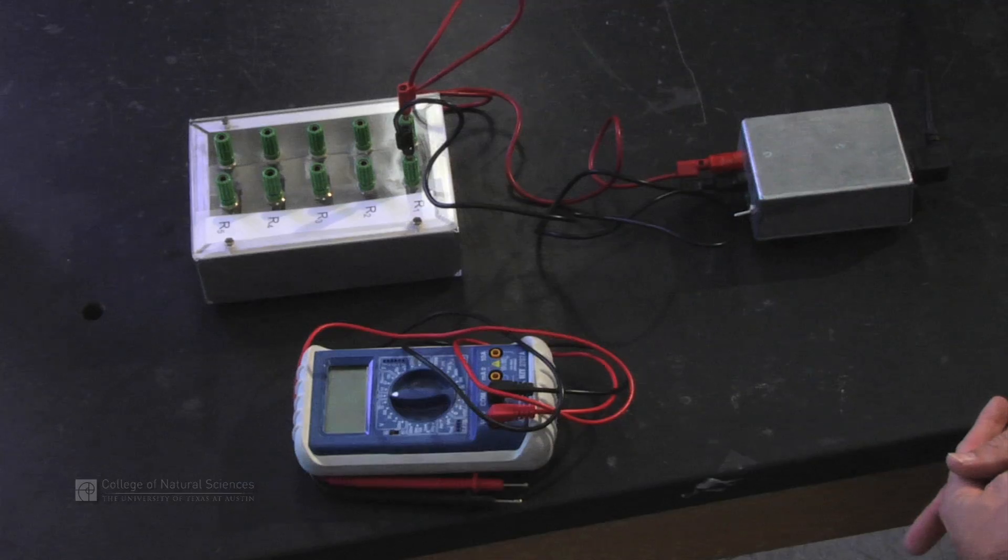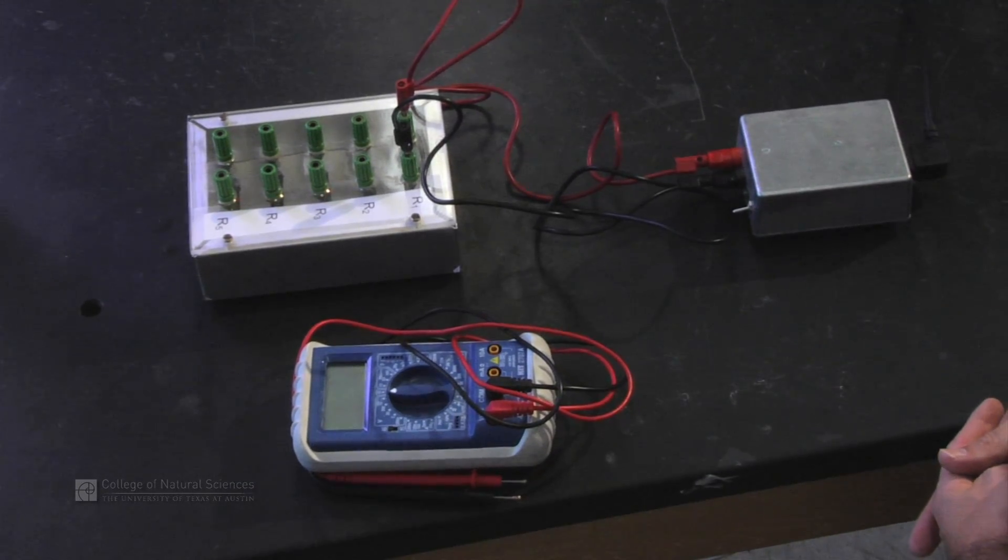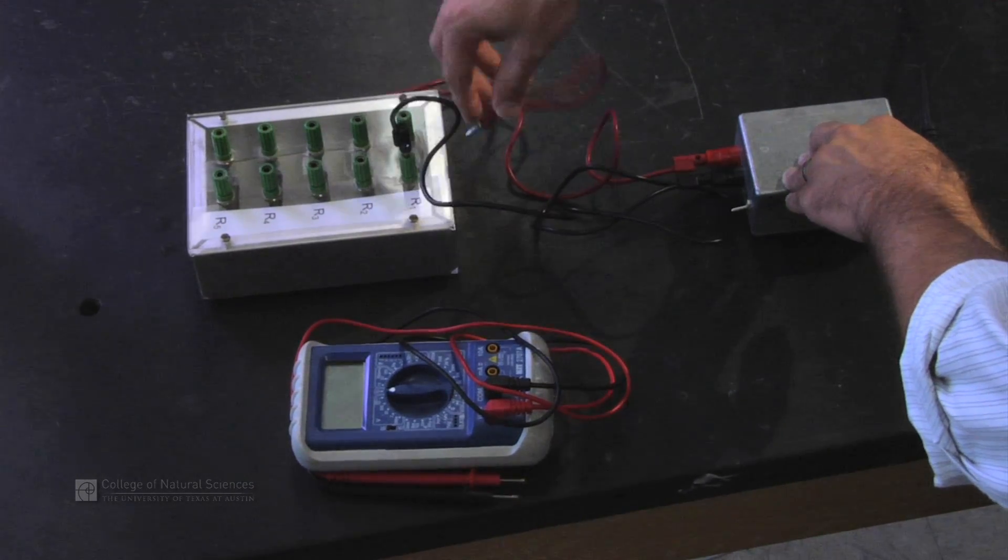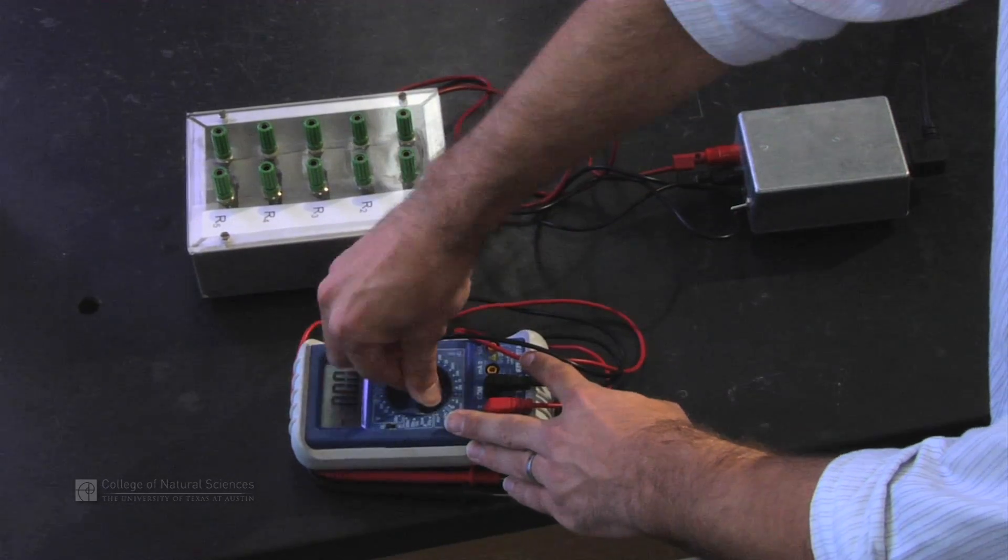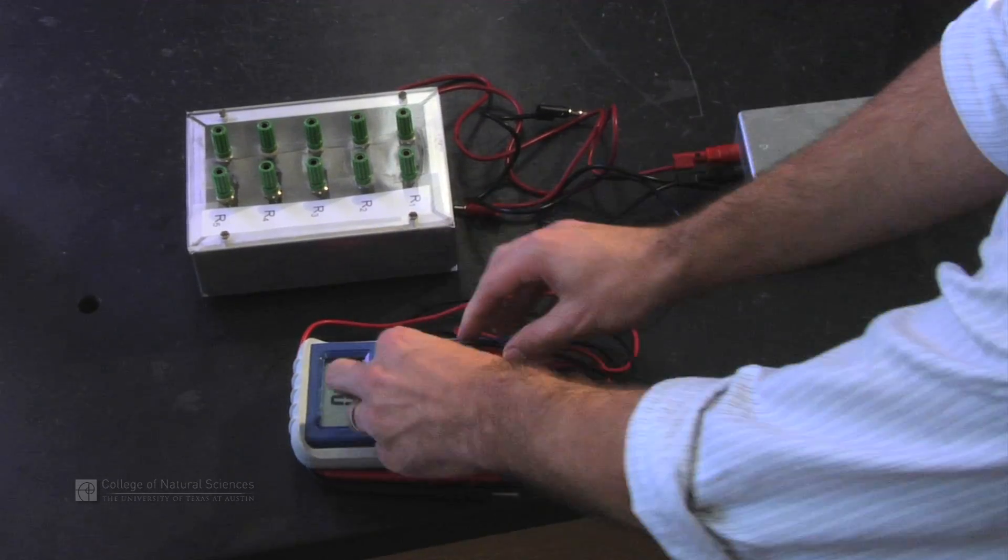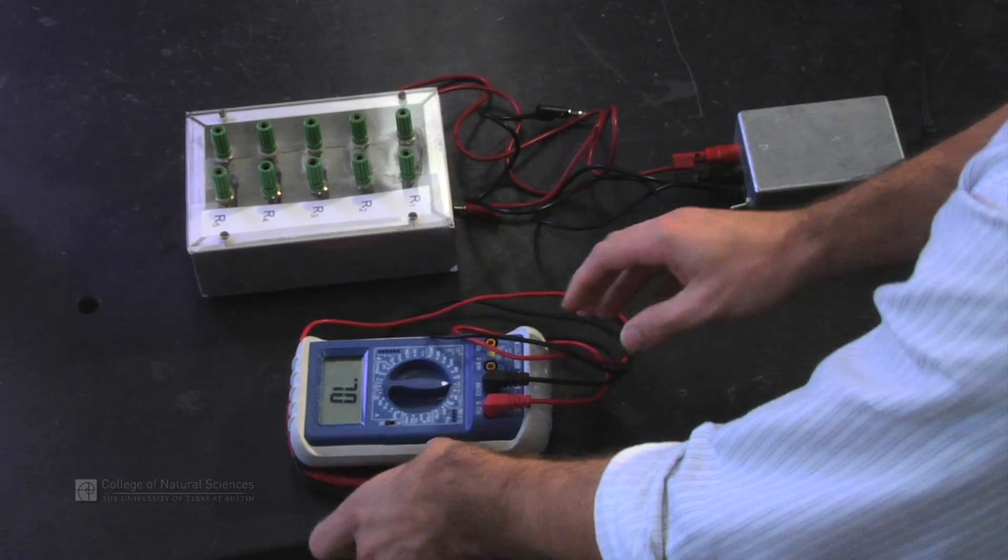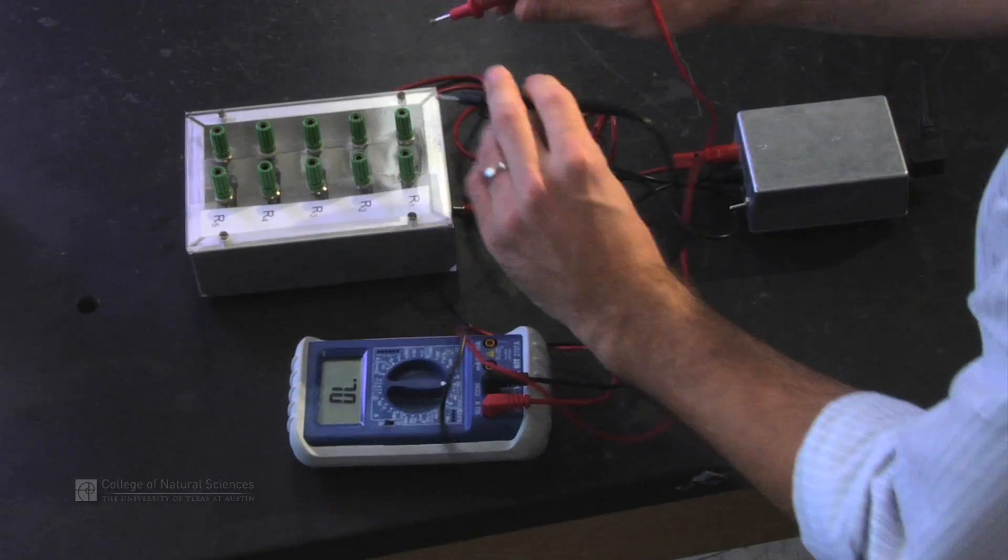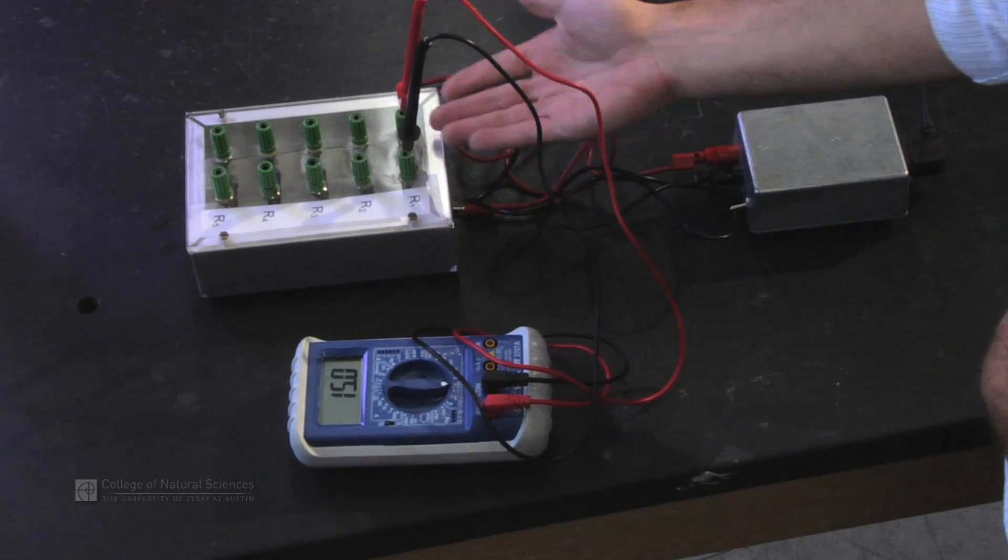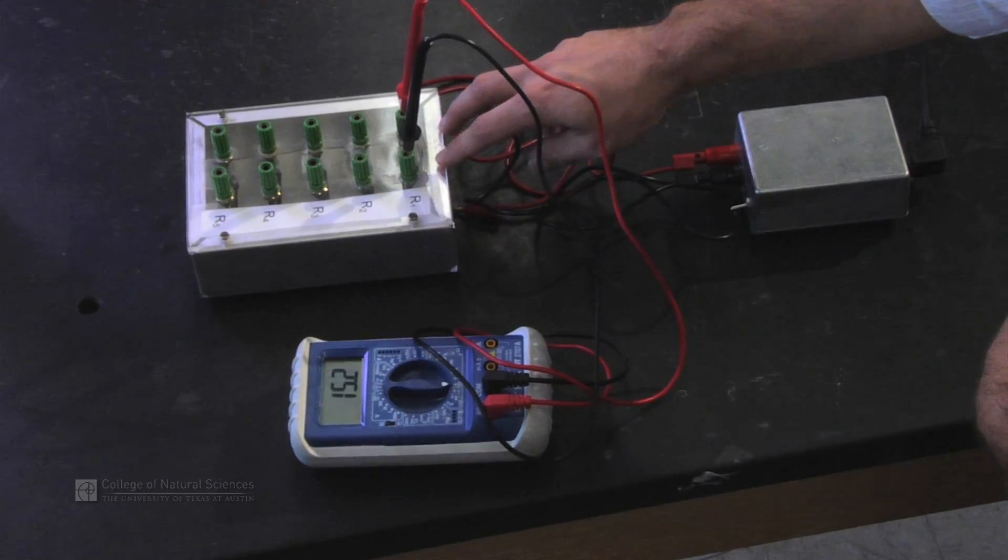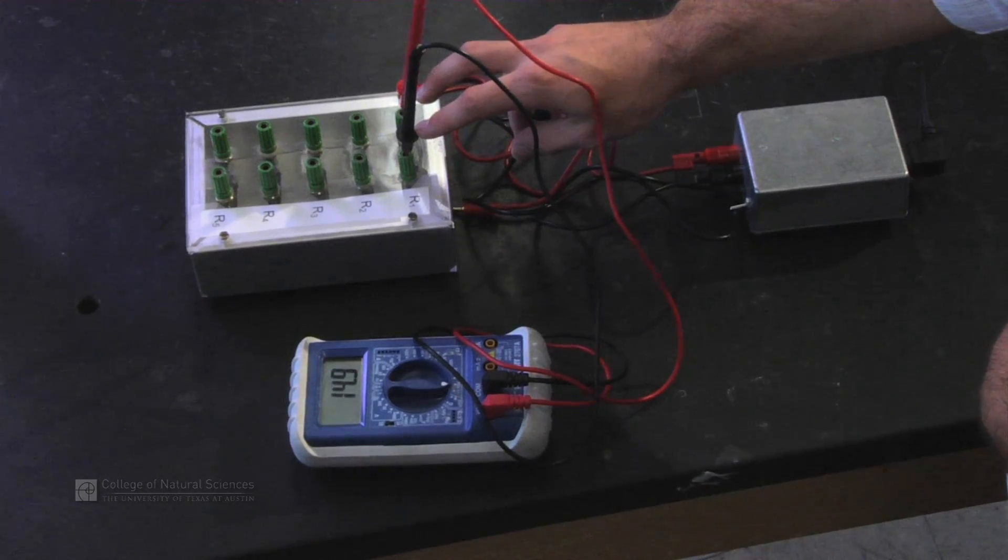If we want to measure resistance of a component, what we need to do is disconnect that component from the circuit, set our multimeter to measure resistance, and measure the resistance across whatever component, in this case a resistor, using our two probes.